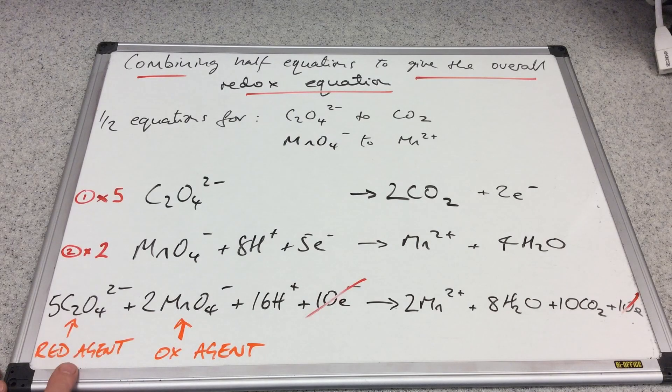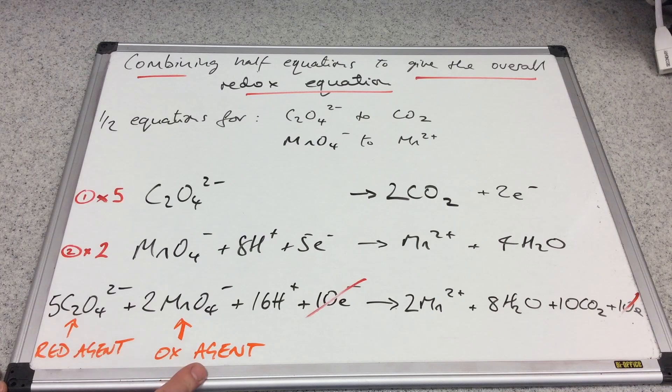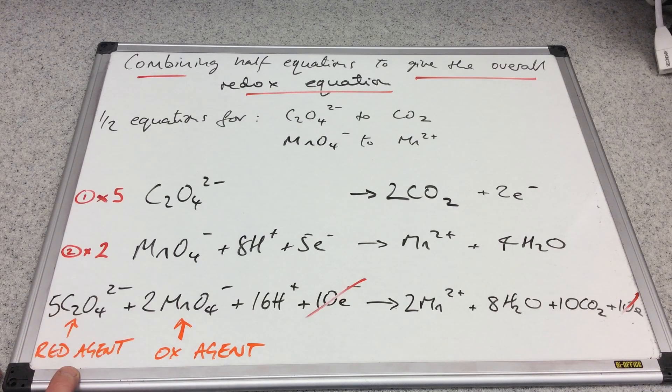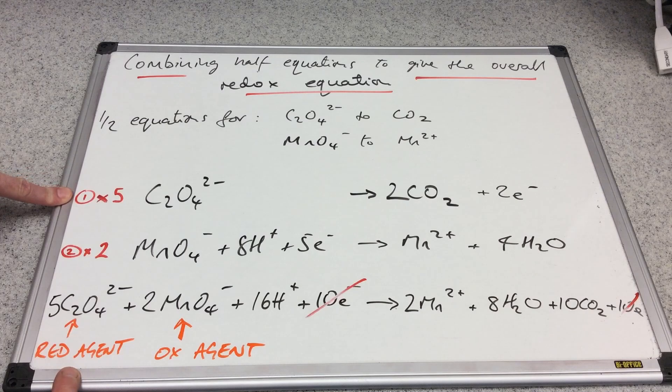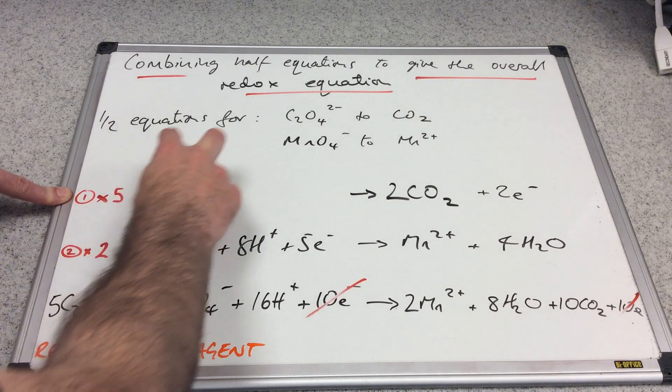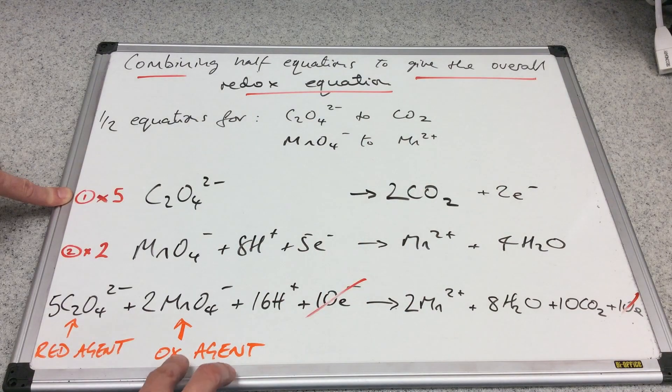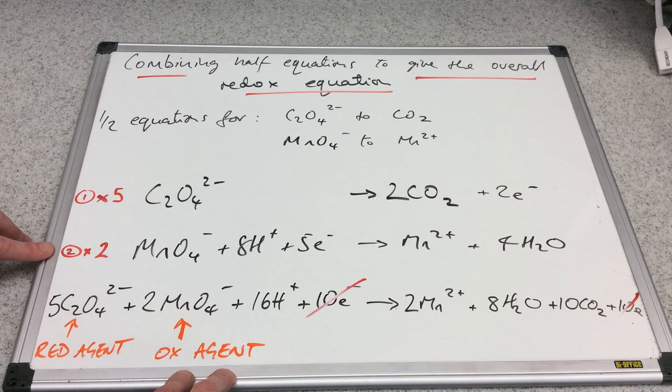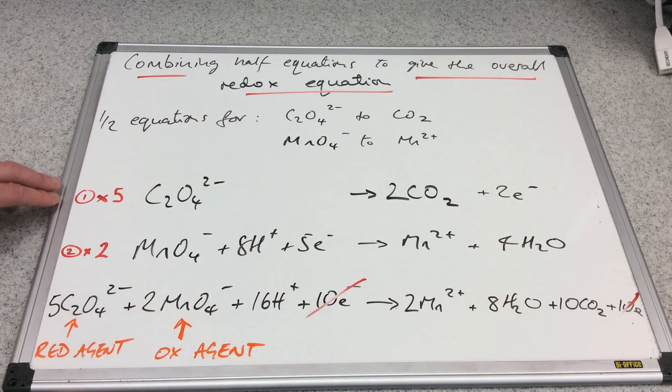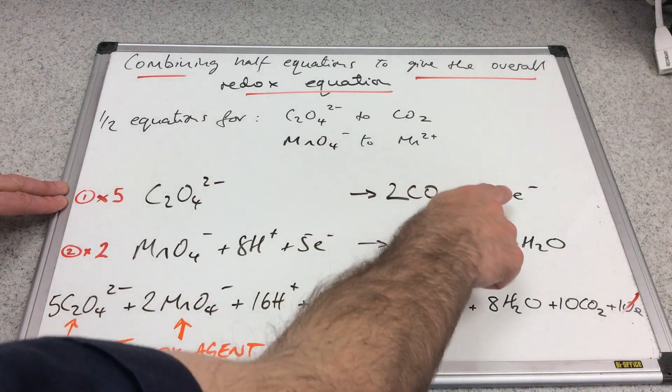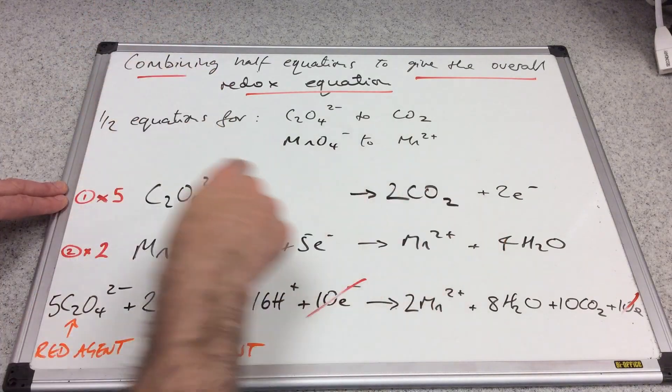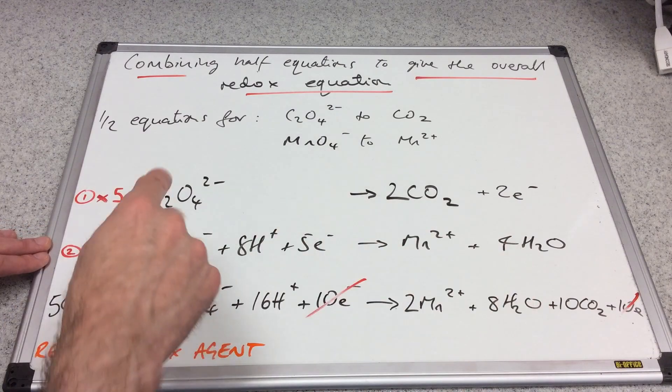We'll just quickly look at the roles of each of these chemicals. This is acting as a reducing agent, and this is acting as an oxidizing agent. The ethane dioate ion is acting as a reducing agent - what do reducing agents do? They donate electrons, and it's obviously donating those two electrons there. The oxidizing agent is an electron acceptor, accepting those five electrons there. Another trick you can use - if this is the oxidation process, it's acting as the opposite kind of agent, so it's a reducing agent. This is reduction, so that's an oxidizing agent.